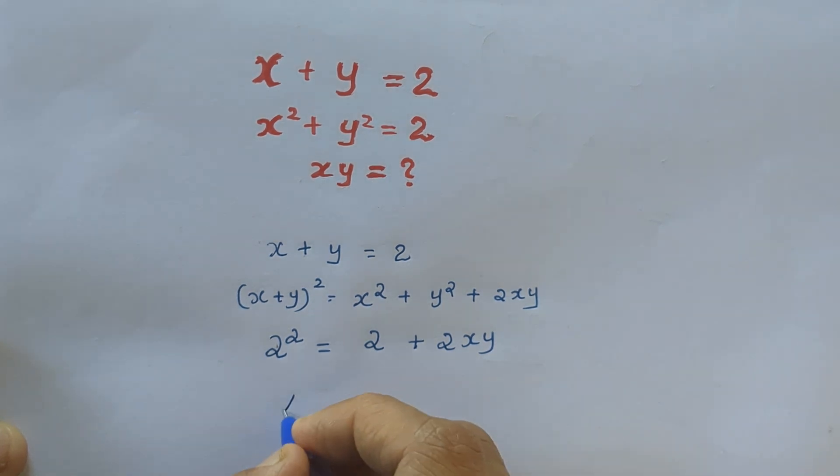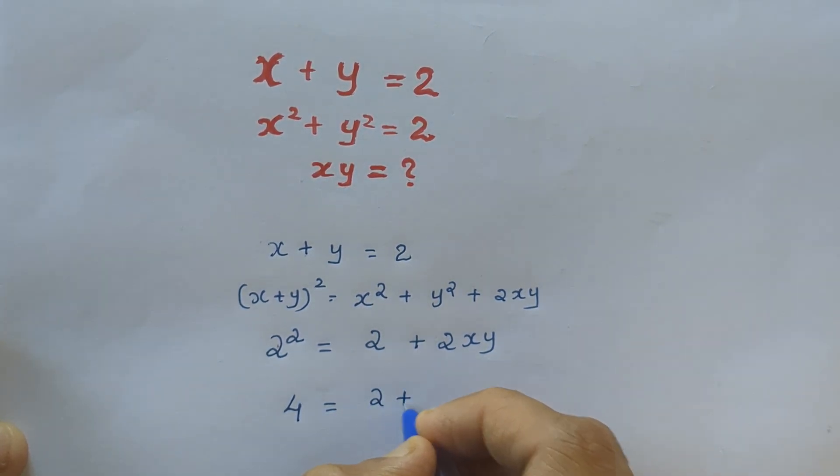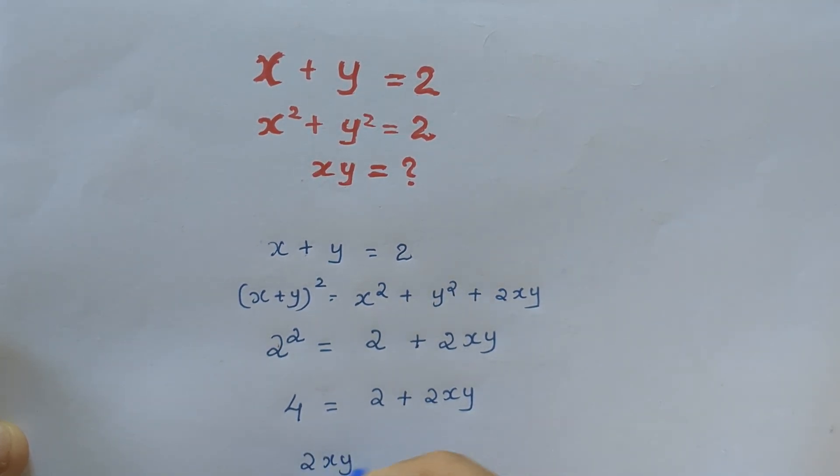It is 2 plus 2xy, right? So 4 equal to 2 plus 2xy. So 2xy equal to 4 minus 2, right?